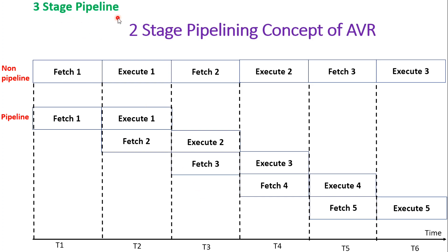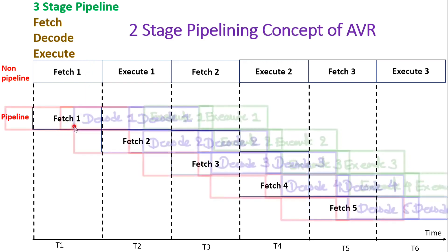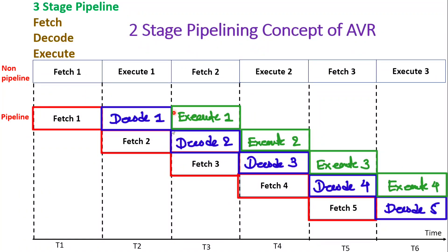Let us understand the three-stage pipeline supported by ARM controllers to clarify the difference between two-stage and three-stage. In three-stage we have fetching, then decoding, then execution. In two-stage we only have fetch and execute, but in three-stage pipeline we also have a decode stage. So it works as: fetch, decode, execute for the first instruction; then fetch of second, decode, execute; and three stages happen in every clock cycle. The latency for three-stage pipeline is three clock cycles, since the first instruction completes after the third clock. This pipelining architecture overall improves CPU efficiency.